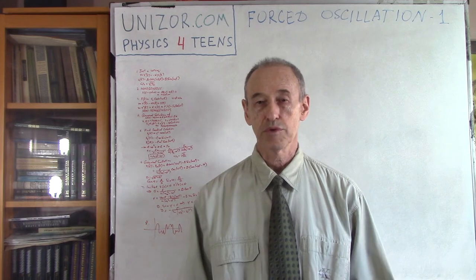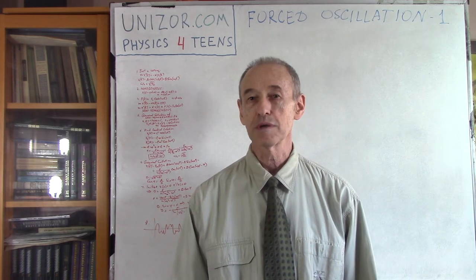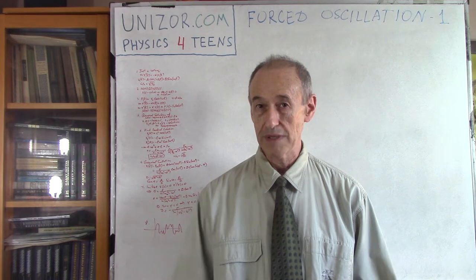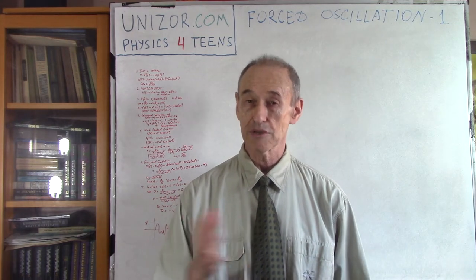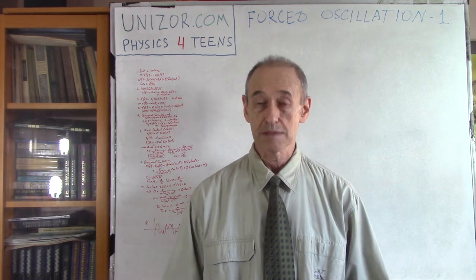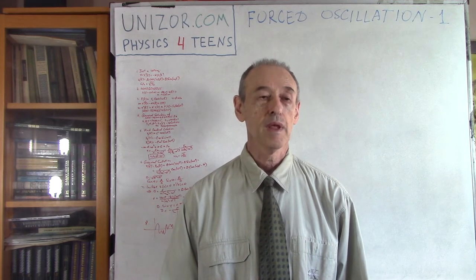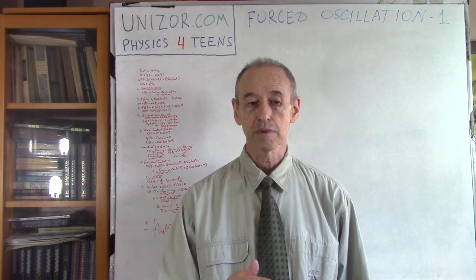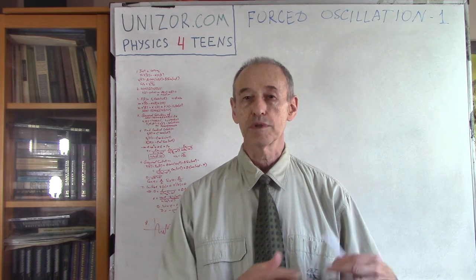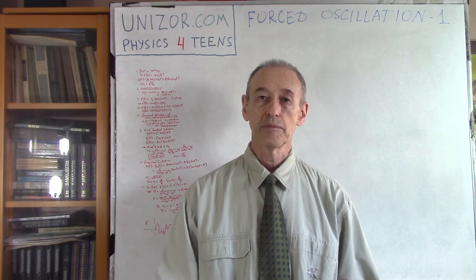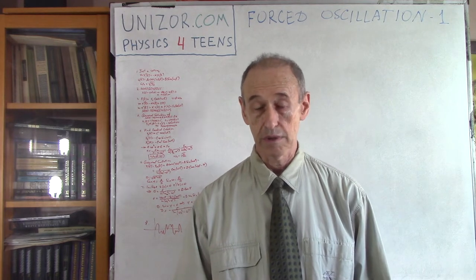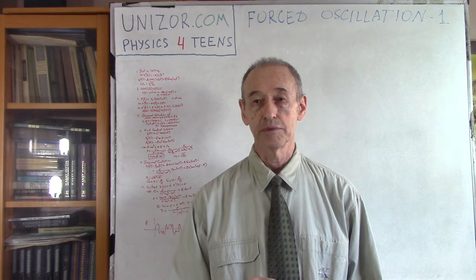Forced oscillation — everybody knows about it. For instance, the swing: when we try to push it at a certain frequency, it goes back and forth. We can maintain this back-and-forth movement on the swings, and that's basically an example of forced oscillation. In our case, we will concentrate more on the spring — an object on the spring — as in the previous lectures when we were considering free oscillation and oscillation related to friction or viscosity of the environment.